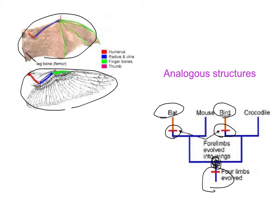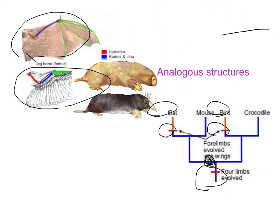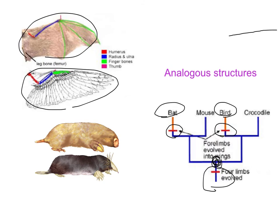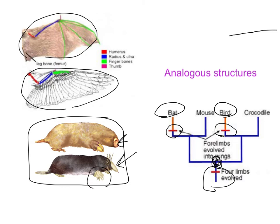Analogous structures are a result of selection pressure — for whatever reason, it was better for the bat and the bird to develop wings instead of arms. Another example is two moles, one from Europe and one from South America, that look very similar and have similar traits — strong noses, heavy front limbs with large claws, streamlined bodies — because they do the same thing: live underground. These came about due to selection pressure, not ancestral relationship.